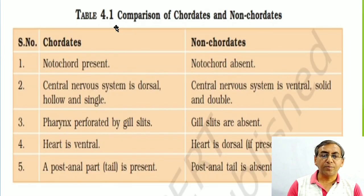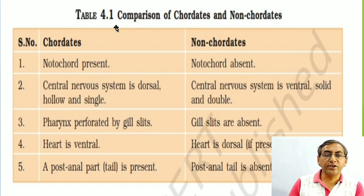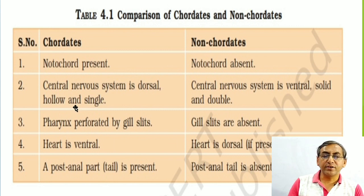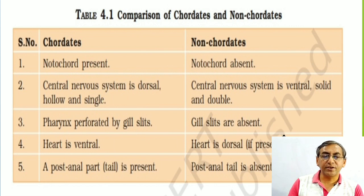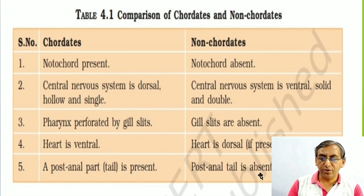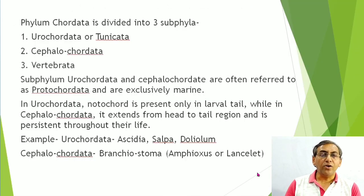Comparison between chordates and non-chordates: Notochord — present in chordates, absent in non-chordates. Central nervous system — dorsal, hollow, and single in chordates; ventral, solid, and double in non-chordates. Pharynx perforated by gill slits in chordates; gill slits absent in non-chordates. Heart is ventral in chordates; dorsal (if present) in non-chordates. Post-anal tail present in chordates; absent in non-chordates.